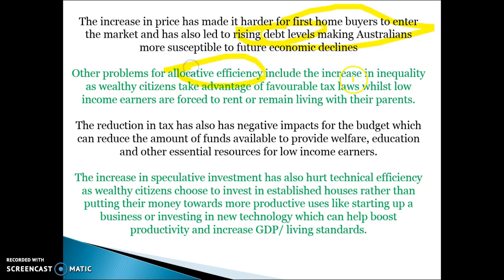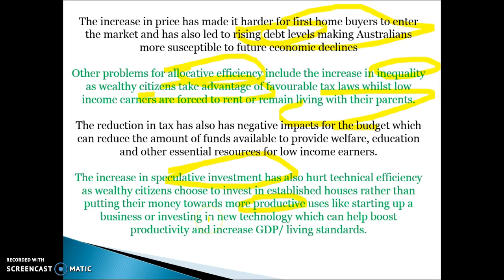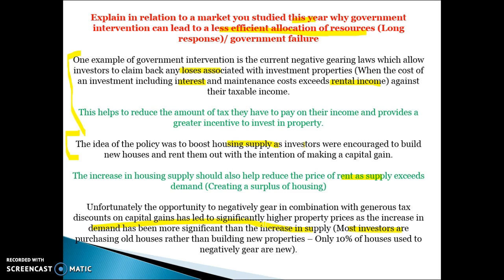One problem for allocative efficiency is the increase in inequality as wealthy citizens take advantage of favourable tax laws — some people in Australia earn $100,000 to $200,000 a year but pay no tax because they've negatively geared so many houses, while low-income earners are forced to rent or remain living with their parents. This reduction in taxes has had negative impacts for the budget, reducing funds available for welfare and education. The increase in speculative investment has also hurt technical efficiency because people are buying existing houses rather than putting money into productive uses like setting up a business or investing in new technology, which hurts GDP and living standards.